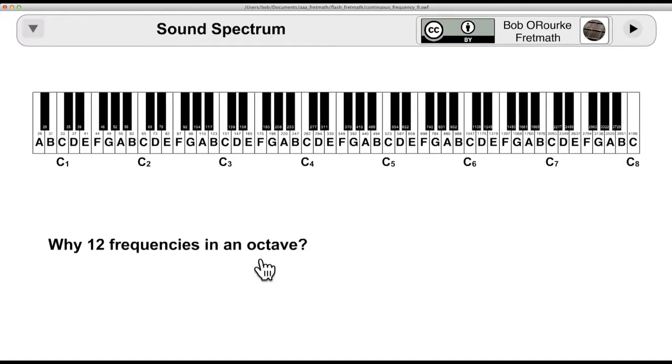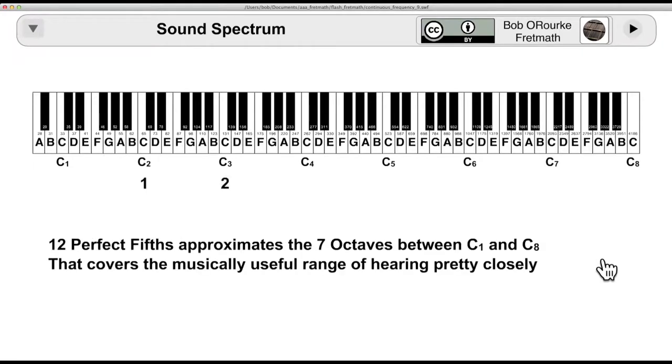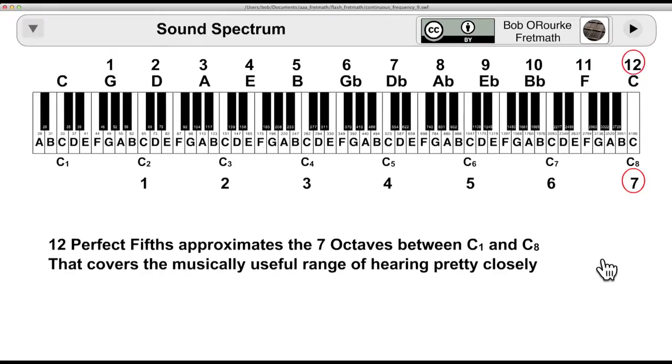And the next question, of course, is why are there twelve frequencies in an octave? This is in the western scale, or the piano. And the answer is, twelve perfect fifths matches seven octaves. The seven octaves of the piano scale. Not precisely, but close enough.